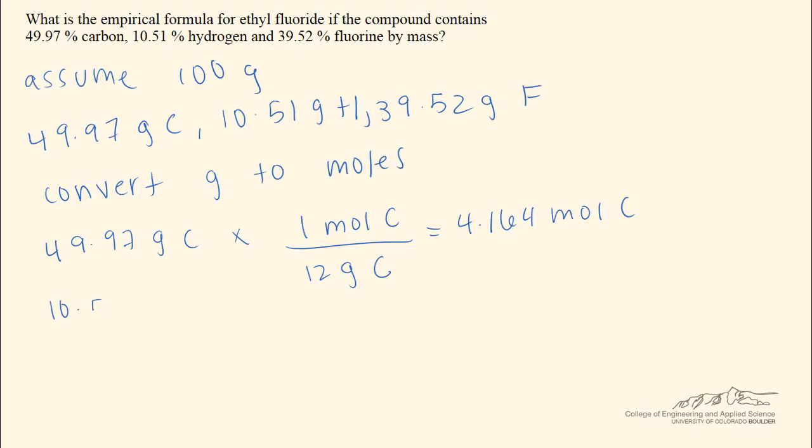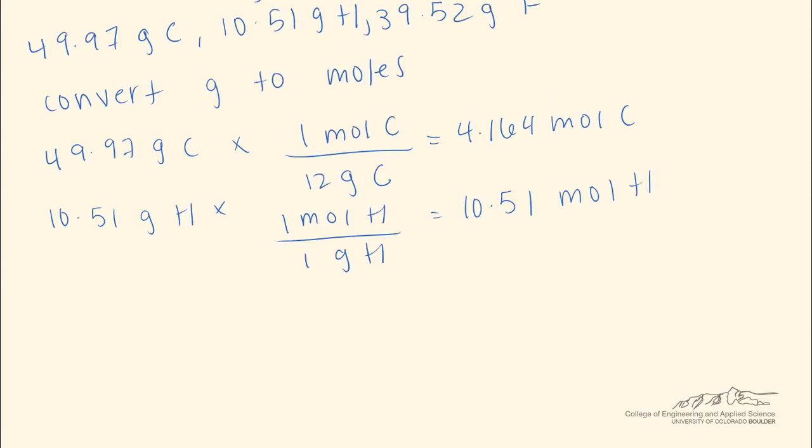Similarly, we can do this for hydrogen. So for every one mole of hydrogen we have about one gram of hydrogen, and therefore we have about 10.51 moles of hydrogen. And we can also lastly do this for fluorine, and we get that we have 2.08 moles of fluorine.